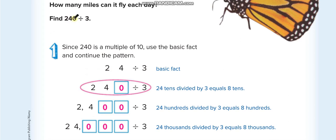If you have zeros on both sides, you can cancel the zeros and you don't need to put them back in the answer. For example: 240 divided by 30 — the zero in the divisor cancels the zero in the dividend. No need to put the zero back in the answer; just divide 24 divided by 3, which equals 8.